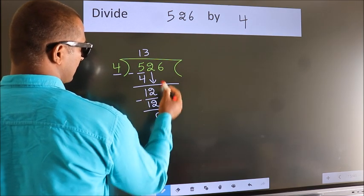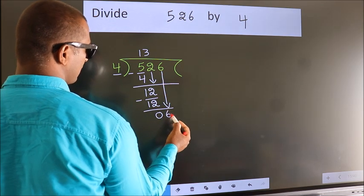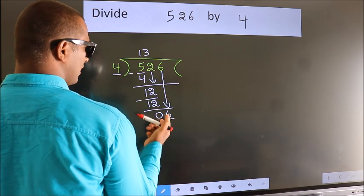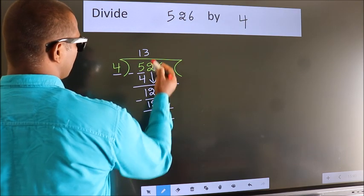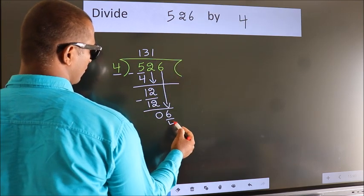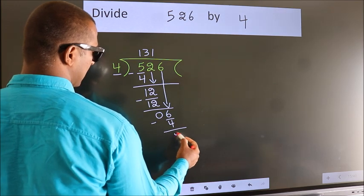After this, bring down the beside number. So, 6 down. So, 6. A number close to 6 in the 4 table is 4, once 4. Now, we subtract. We get 2.